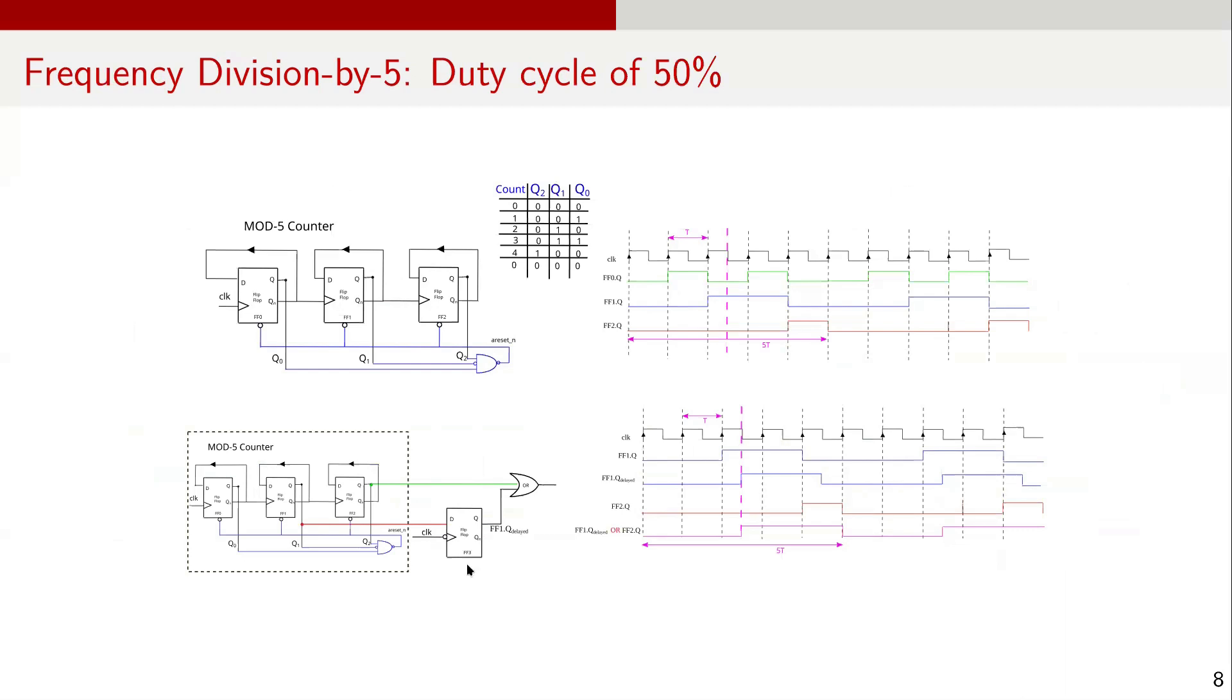To generate a divide by 5 output with 50% duty cycle, let's carefully examine FF2Q and FF1Q. FF2Q is high for 1 clock cycle and low for 4 clock cycles. To achieve a 50% duty cycle, the high and low times must each last for 2.5 clock cycles. The idea is to extend the high portion of this signal so that it covers 2.5 cycles instead of just one. To do this, we take FF1Q which is high for 2 consecutive clock cycles and pass it through another D flip-flop that samples on the falling clock edge. This delays FF1Q by half clock cycle, that is T over 2. When we OR this delayed FF1Q with FF2Q, the result is a signal that is high for 2.5 clock cycles and low for 2.5 clock cycles, giving a frequency of f over 5 with a 50% duty cycle.